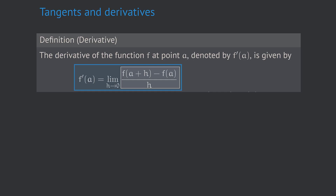In our last videos we have defined the derivative of a function f at a point a to be the so-called differential quotient, which is the limit of slopes of a sequence of so-called secants. Calculating the differential quotient, or in other words the derivative of f at a, is all about calculating limits of sequences. We have used this technique to find a very important rule for differentiation, the so-called power rule.